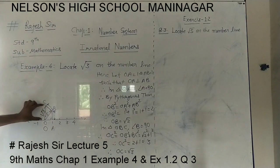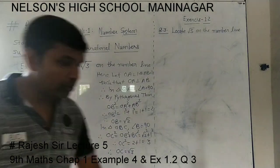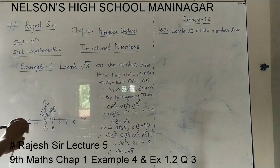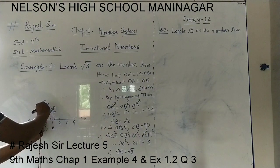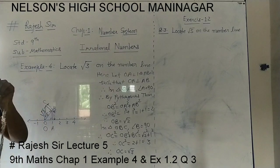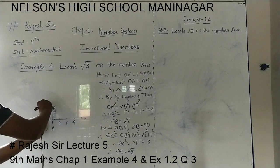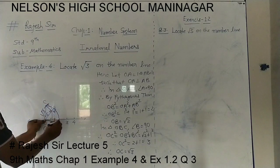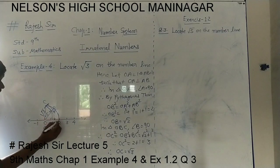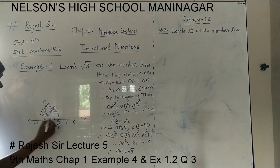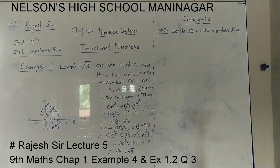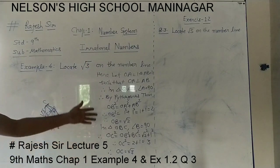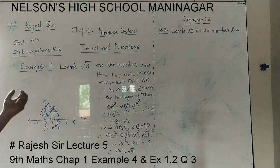Now we have OC as the root 3 length. We take this length with the compass — place the compass point on O and set the pencil point up to C. With this root 3 length, keeping the compass on origin O, we draw an arc intersecting the number line. We call that point P, and this point P represents root 3 on the number line.